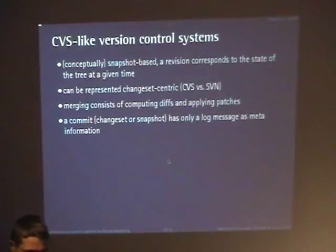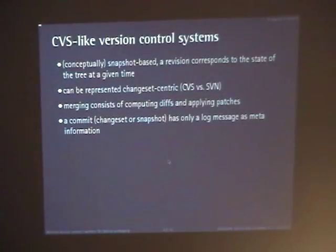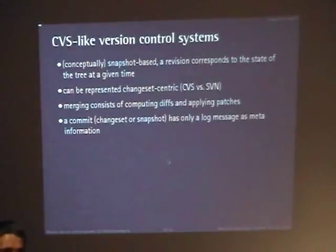On the left side we had the CVS-like version control systems. Conceptually, I mean — there are people who do version control systems for a living and can prove things mathematically. When I say snapshot-based, some people will say CVS was never snapshot-based and SVN is, but Bazaar is not, and so on. It's probably a very overloaded term. But let's say it is conceptually snapshot-based: a revision control system that maintains a certain state of a tree at any point in time.